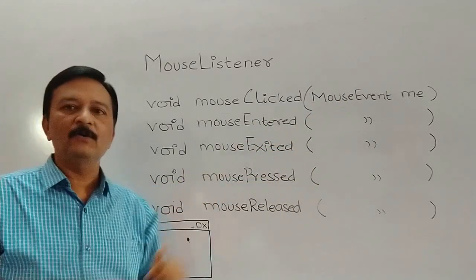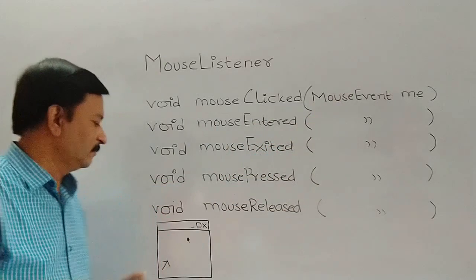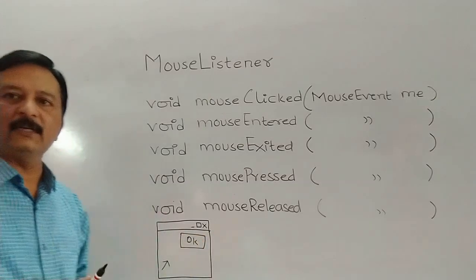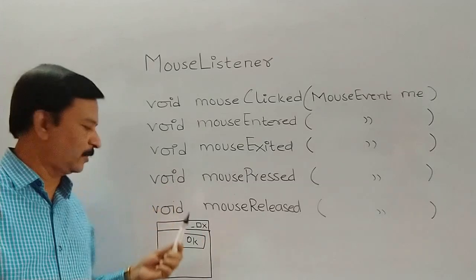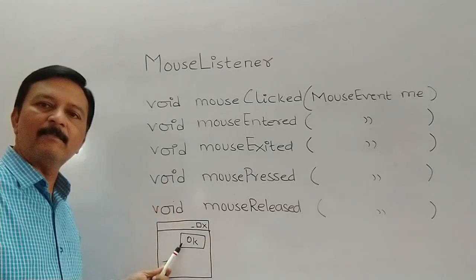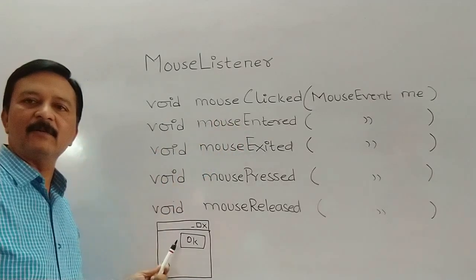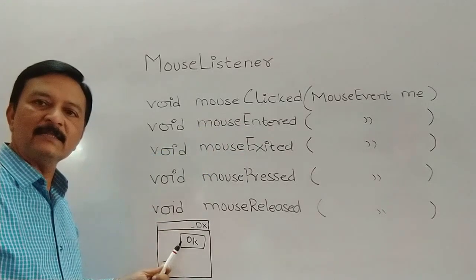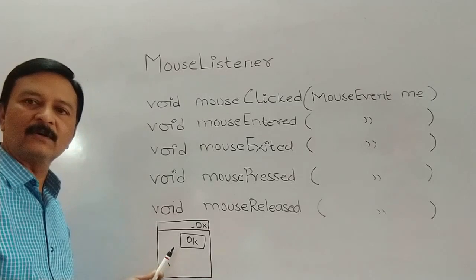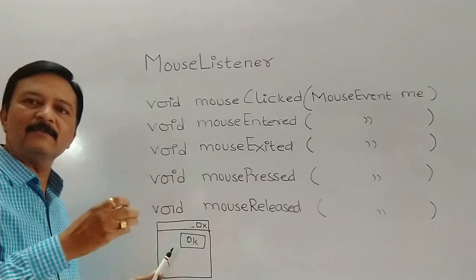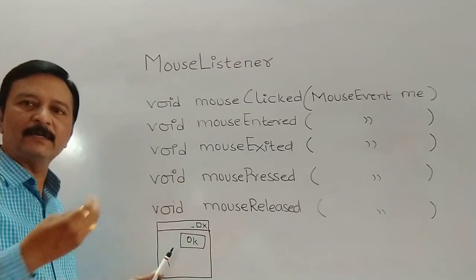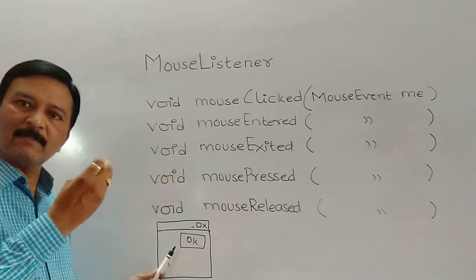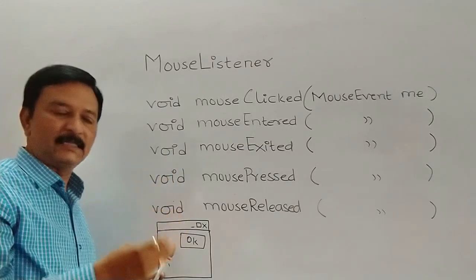The next method is mouseEntered. Take for example a button drawn on the form. When the mouse pointer enters the area of that button, the mouseEntered event is executed. And when the mouse pointer moves outside of that component area, that is called mouseExited. So entering a component's area triggers mouseEntered and leaving it triggers mouseExited.